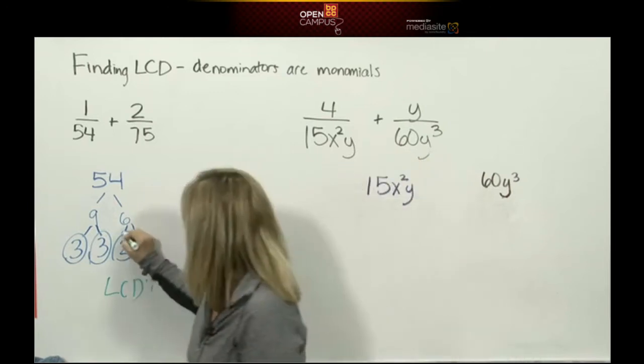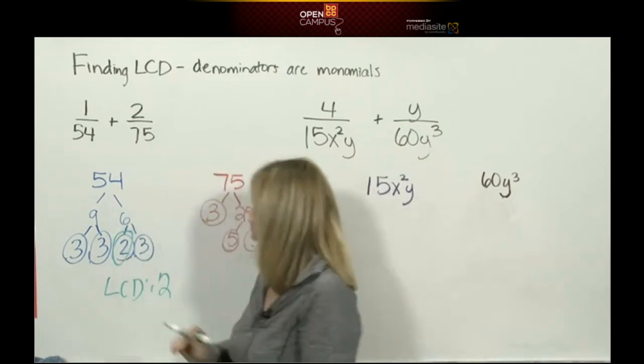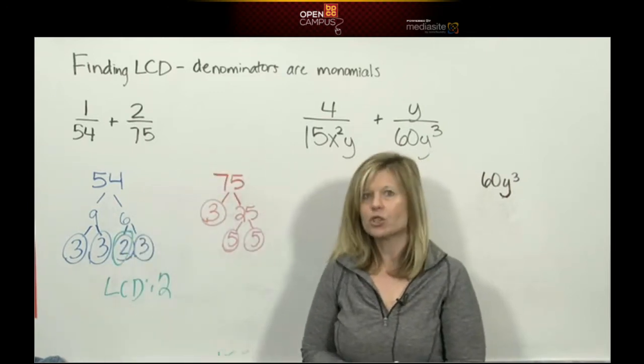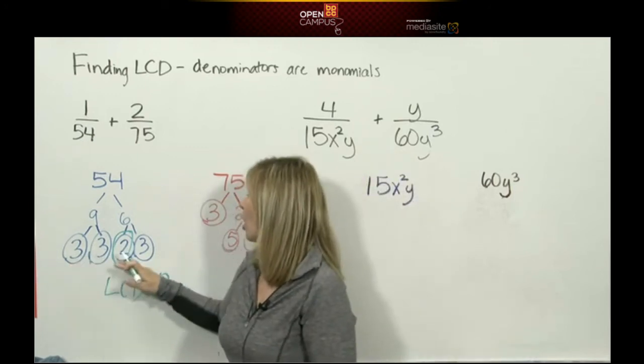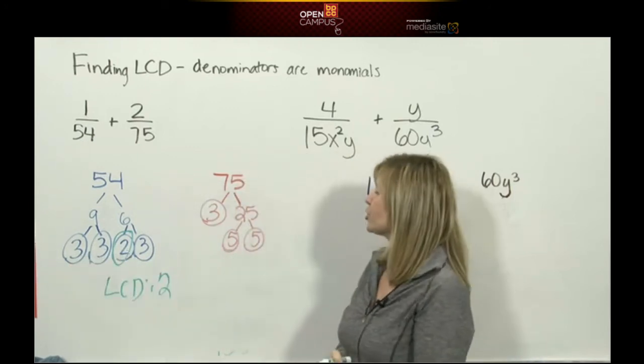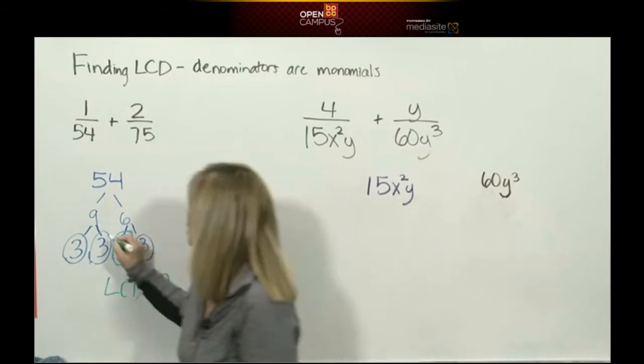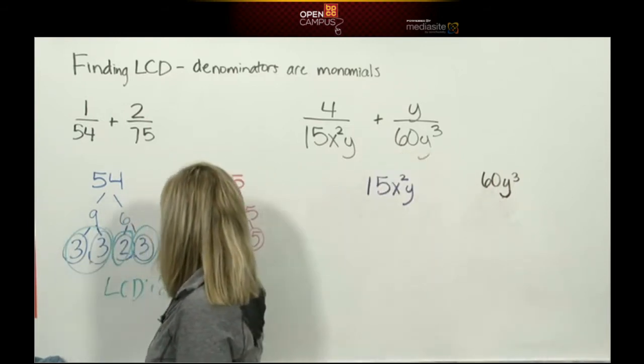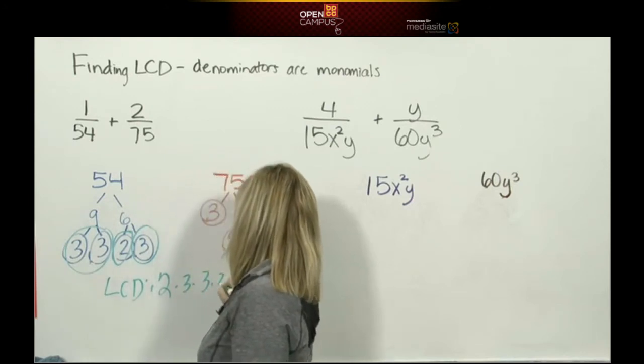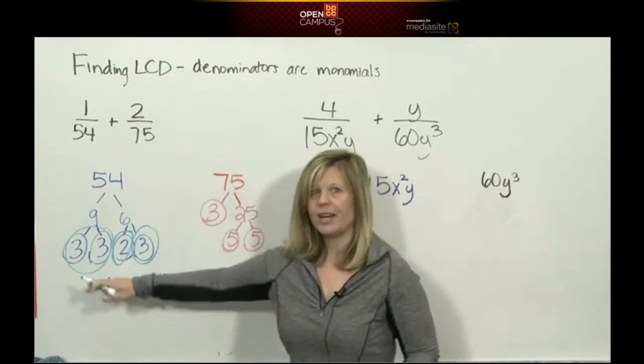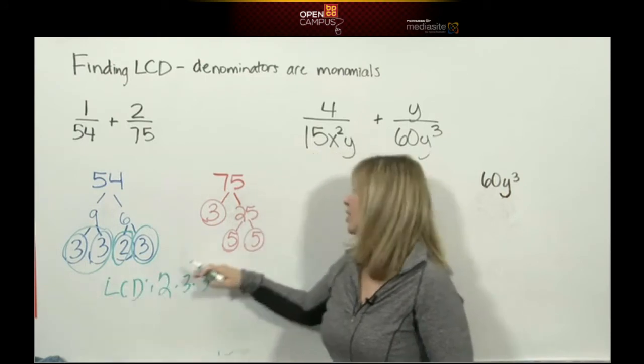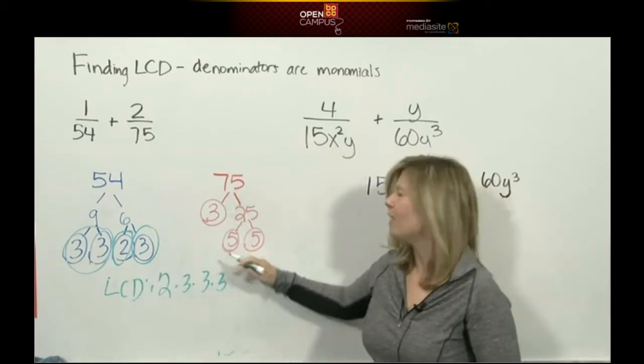This tree has three 3s, this tree has one 3, so we need the most—we need all three 3s. This tree has no 5s, this tree has two 5s. I need the most—the two 5s.